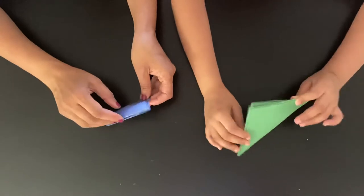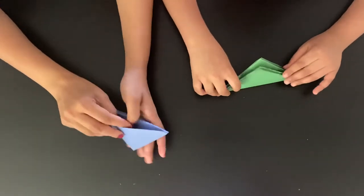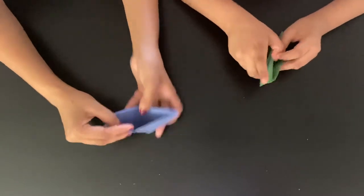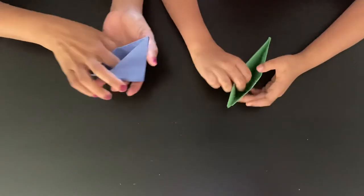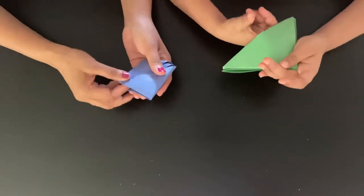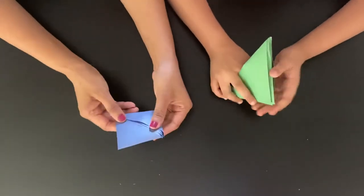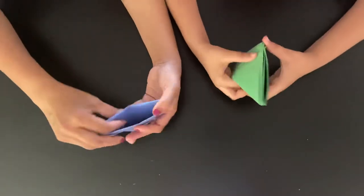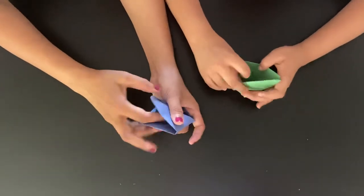Now you can see one pocket over here. So what we'll do is we'll put our finger inside and then try to fold it like this. So first we put a finger and we fold it in half.